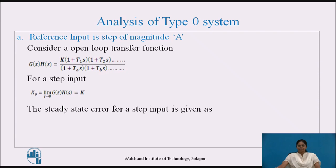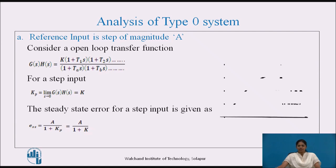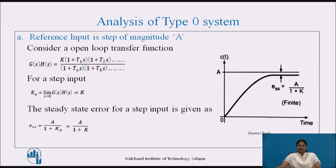The steady state error for step input is given as E(S) equal to A divided by (1 + Kp). After substituting Kp equal to K, we get steady state error equal to A/(1 + K). That is, a Type 0 system follows the step type of input with finite error A/(1 + K), which can be reduced by changing A or K or both. K can be increased by introducing a variable gain amplifier in the forward path, but there is a limitation on the increase in K from a stability point of view. The corresponding response is shown in the figure, showing finite error of A/(1 + K).